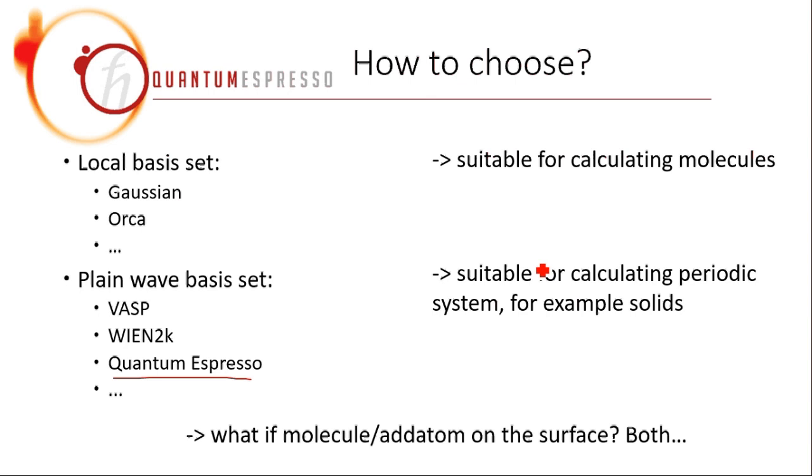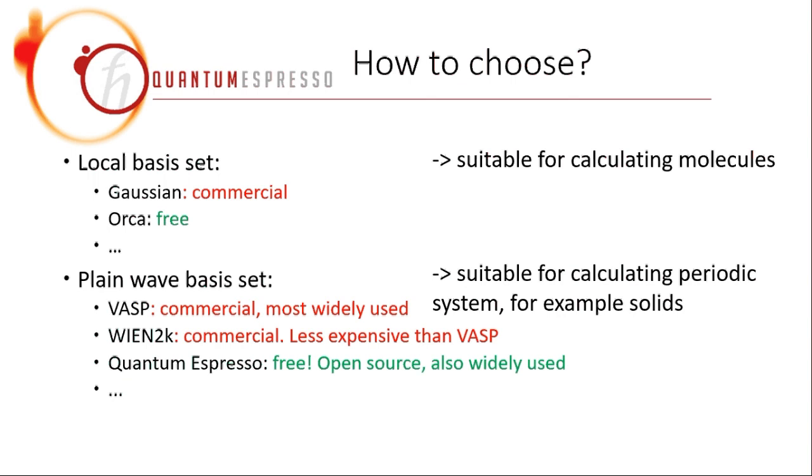Another important factor that influences which software you choose is whether it is commercial or free. For example, Gaussian is commercial, Orca is free.